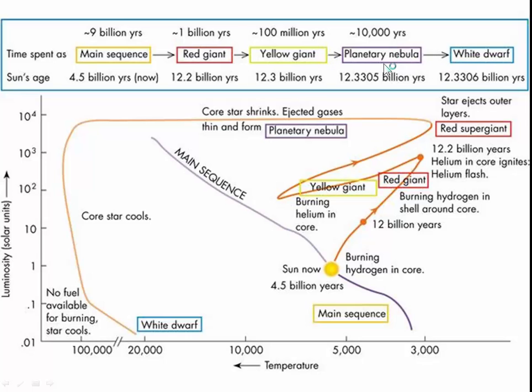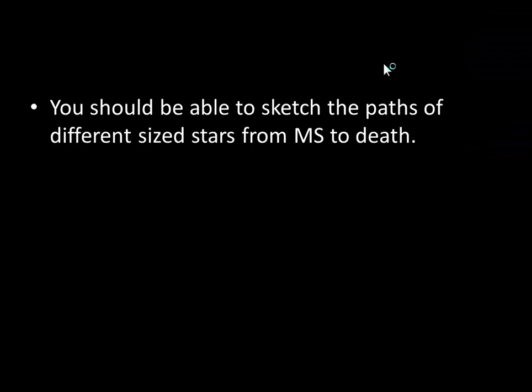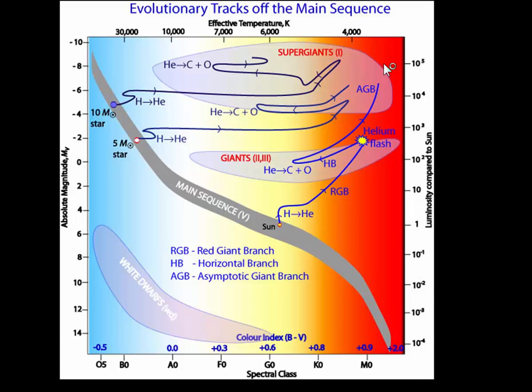You should be able to sketch the paths of different size stars from the main sequence to death. So this is what we looked at, this blue line here, and then to the white dwarf. You need to know with a 5 solar mass star the kind of path it takes. Same thing - it turns into a red giant, then the helium will start to burn, it becomes a little bit hotter, not much smaller though because it's a much bigger star. And then it will end up being a red supergiant. And the same for a 10 solar mass star. Notice these are sketched until this becomes planetary nebula; these will turn into supernova.